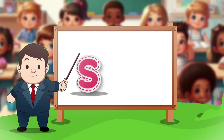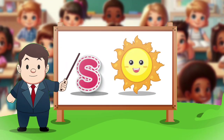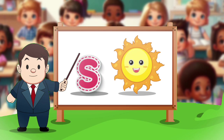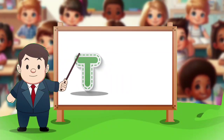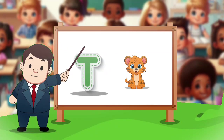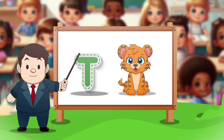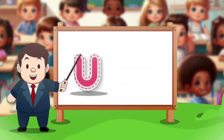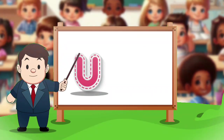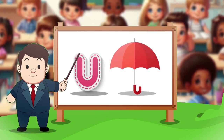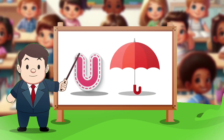S. S for sun. T. T for tiger. U. U for umbrella.